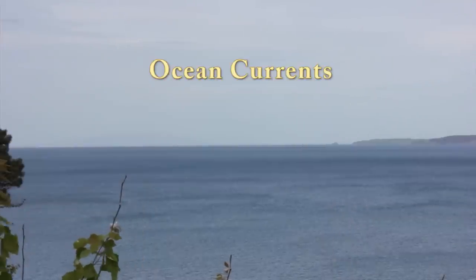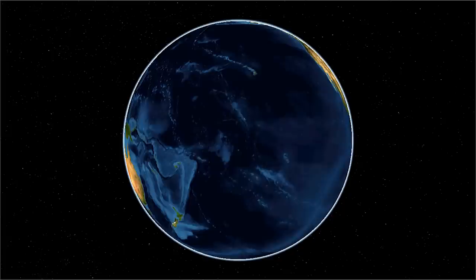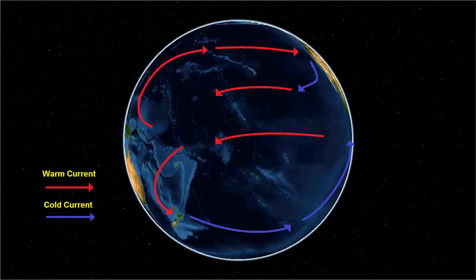Ocean currents have a big influence on climate. 70% of this planet is ocean. When an air mass passes over a warm ocean current the air mass is warmed. When the air mass passes over a cold ocean current it is cooled.